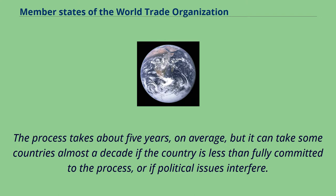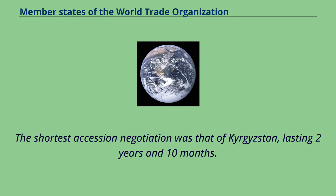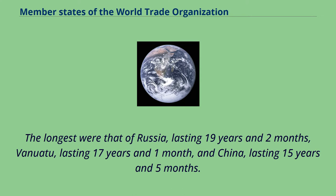Accession can also be delayed if political issues interfere. The shortest accession negotiation was that of Kyrgyzstan, lasting two years and ten months. The longest were that of Russia, lasting 19 years and two months; Vanuatu, lasting 17 years and one month; and China, lasting 15 years and five months.